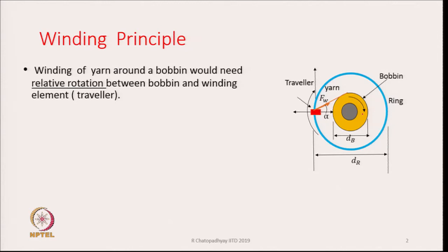The bobbin is turning in the clockwise direction, and as a result the traveler is also turning in the clockwise direction. The traveler turns because it is connected to the bobbin by an element of yarn, and the pulling force from that yarn helps move the traveler on the ring. Now both the bobbin and the traveler are rotating.